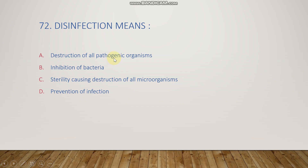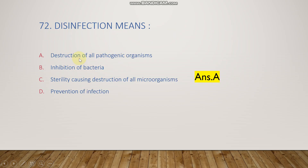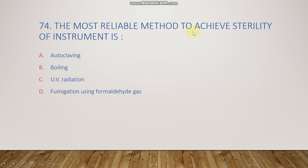The next question: disinfection means destruction of all pathogenic organisms, inhibition of bacteria, sterility, or prevention of infection? The right answer is option A, destruction of all pathogenic organisms. A process of destruction of all living microorganisms including spores is called antisepsis, disinfection, sterilization, or inhibition? The right answer is option C, sterilization. Sterilization kills all vegetative, pathogenic, and endospore forms; disinfection destroys only pathogenic organisms.